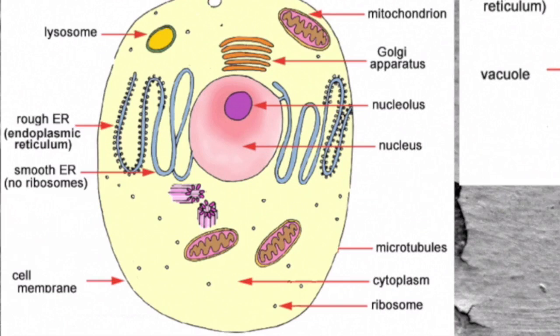The cytoplasm is a jelly liquid. It keeps the cell together and it fills the region between all the organelles inside the cell.